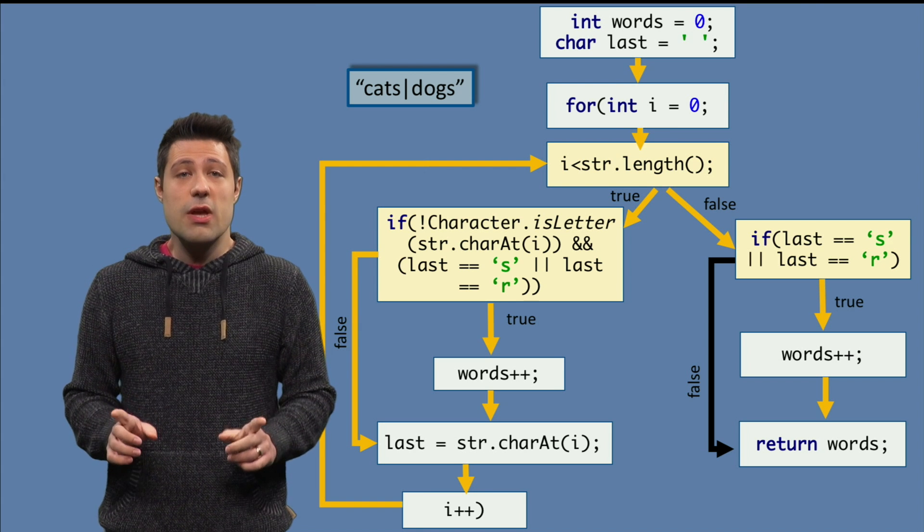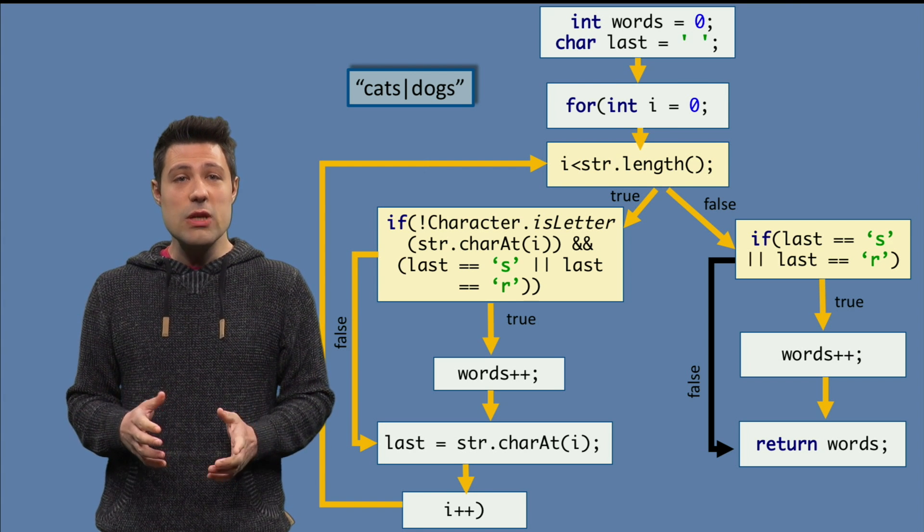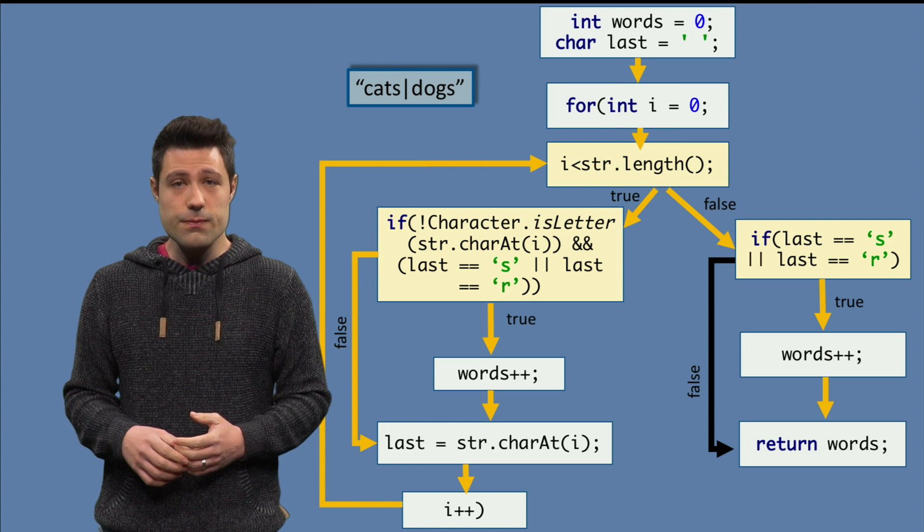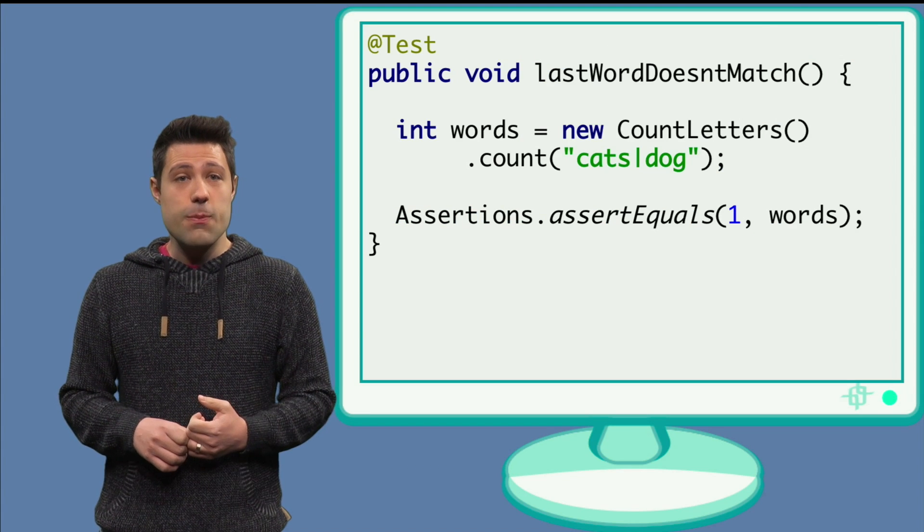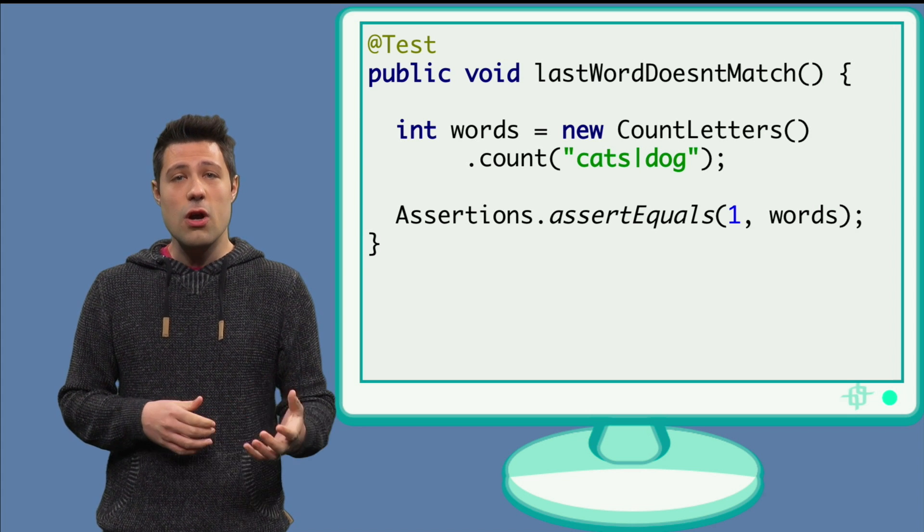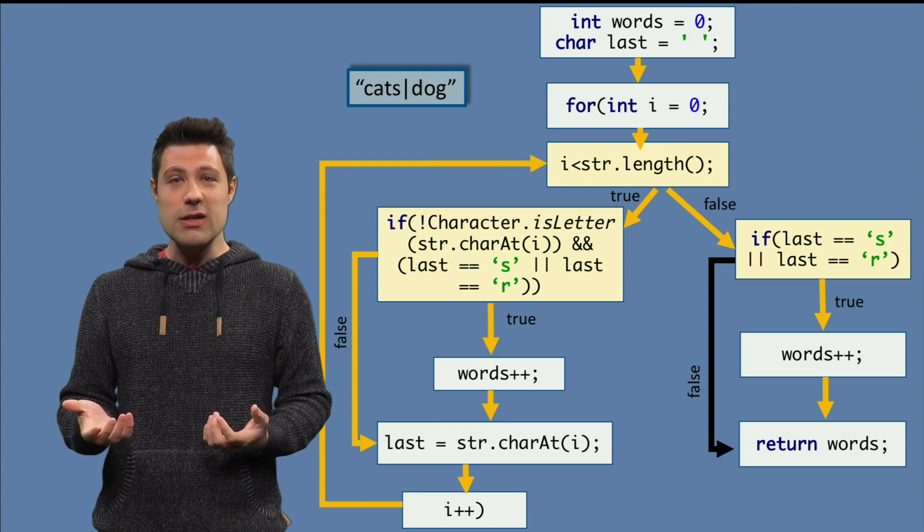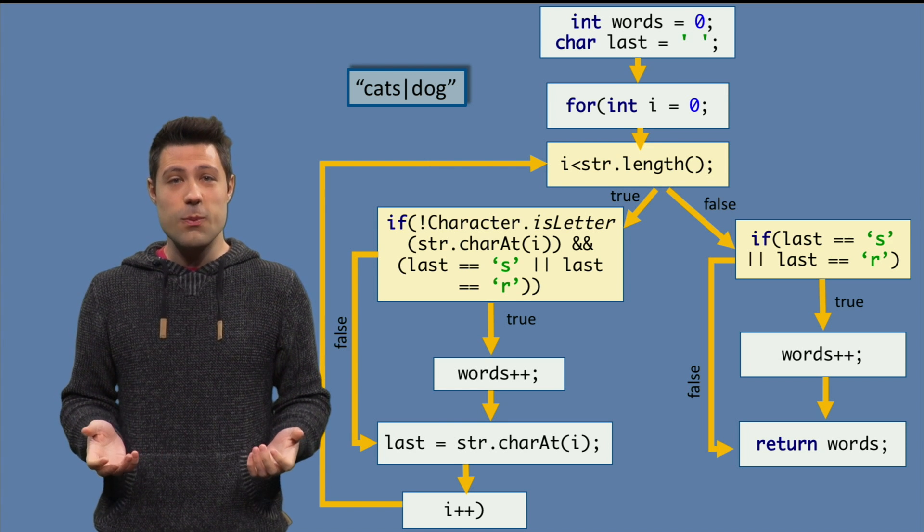Ok, almost there, but we still need to exercise the false branch. And this means we need one more test. That we can do if we pass cats pipe dog as an input. As dog, which is the last word in the string, doesn't end with an s or with an r, then the false branch will be executed.